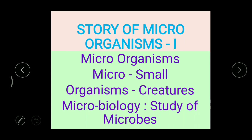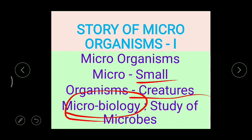What does 'micro' mean? Micro means small, and organisms means creatures. They are very very small, and because of their small size we cannot see them even though they are present — that is why we call them microorganisms. In science there is a special branch to study about them, called microbiology, which means the study of microorganisms or the study of microbes.